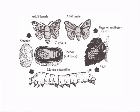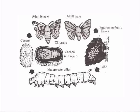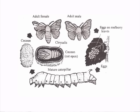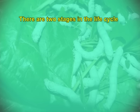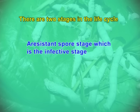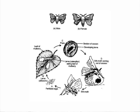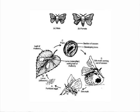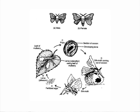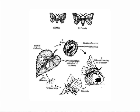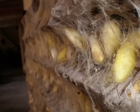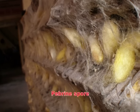The life cycle of the parasite is completed within a single host — the silkworm. There are two stages in the life cycle: a resistant spore stage, which is the infective stage, and a growing or vegetative stage. The life cycle is completed within a week in temperate regions and in four days in tropical regions. All stages of the mulberry silkworm are affected by pebrine disease.